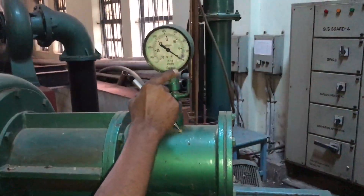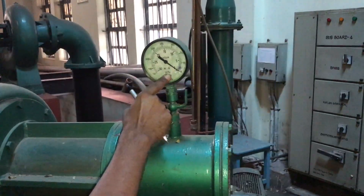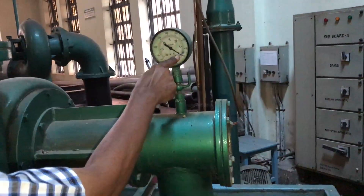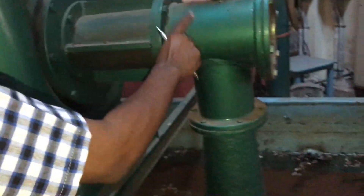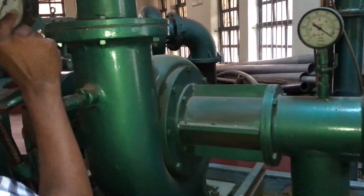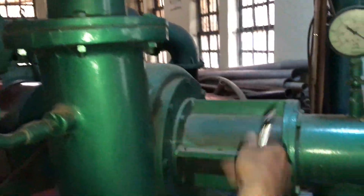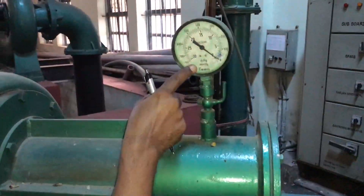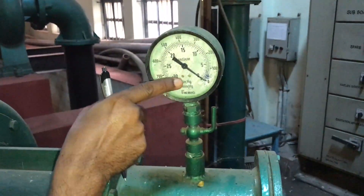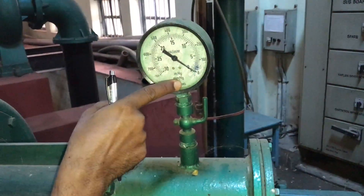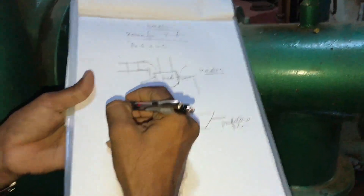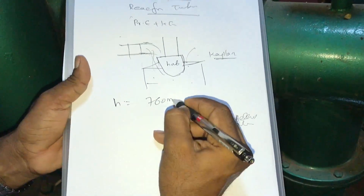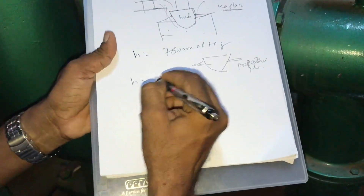A vacuum gauge is connected here because the pressure at the exit is less than atmospheric. In the case of a pump, there is a vacuum gauge on the suction side and a pressure gauge on the delivery side. But in reaction turbines, the inlet pressure head is higher and goes on decreasing, so the exit pressure is less than atmospheric — hence a vacuum gauge is connected. The vacuum gauge reads in mm of mercury. The atmospheric head is 760 mm of mercury.